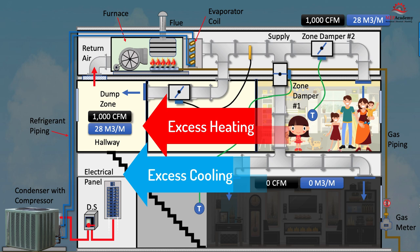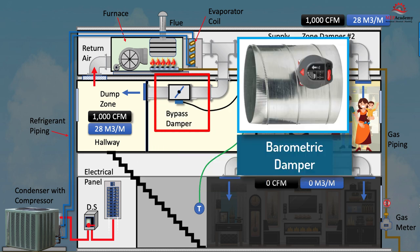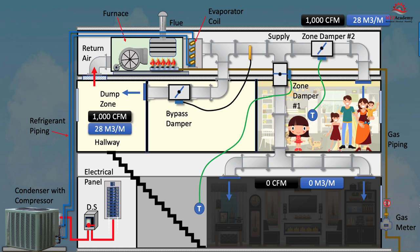We show a motorized bypass damper in this diagram, but a barometric damper is often used. The barometric damper is set to open when the pressure increases to a certain amount, allowing air to bypass the supply and be redirected to the return. Another option is to directly connect the bypass duct to the return duct, which avoids excessive temperature swings in a dump zone. There are many variations of this installation. The best system layout would be to have two separate HVAC systems — one for the first floor and one for the second floor.